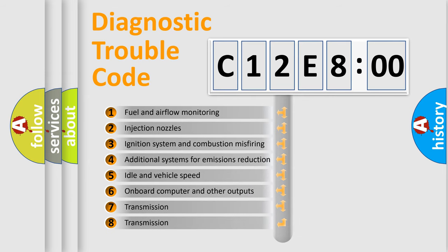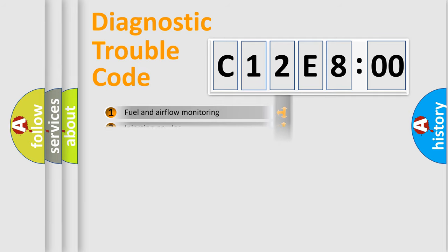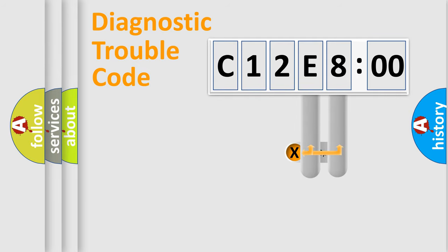The third character specifies a subset of errors. The distribution shown is valid only for the standardized DTC code. Only the last two characters define the specific fault of the group.